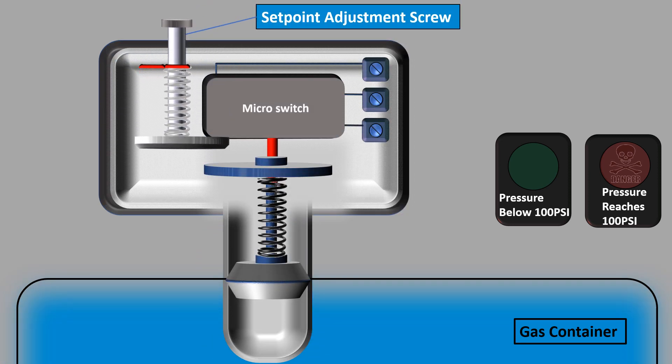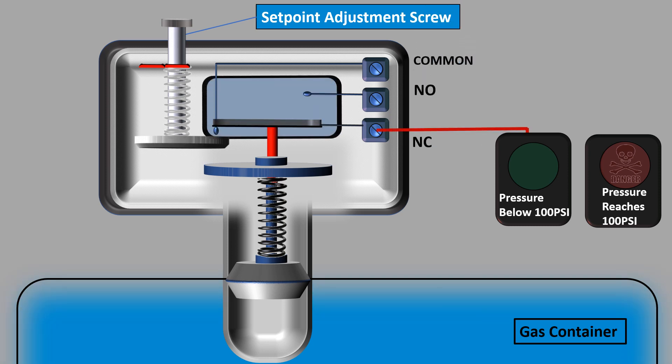Now we wire green light to normally closed (NC) terminal of the switch and red light to the normally open (NO) terminal of the pressure switch. Power is connected to the common terminal of the switch. The inlet pressure from the container is applied to the bottom of the operating piston.